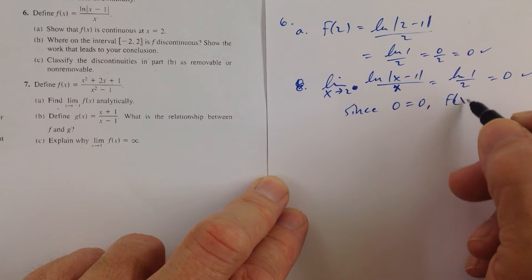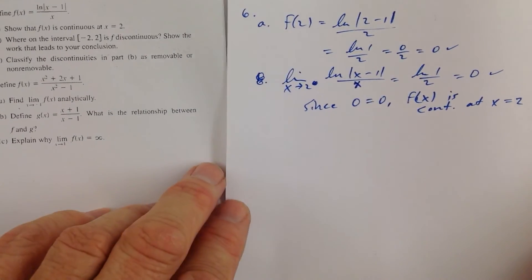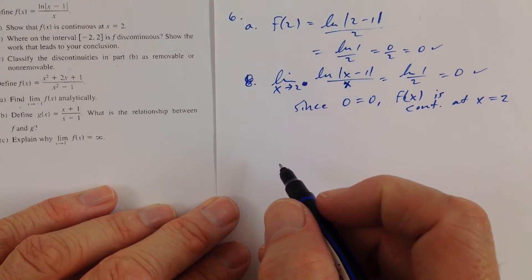And since 0 equals 0, f of x is continuous at x is equal to 2, and you can't see that. There we go. Okay, that's part A.